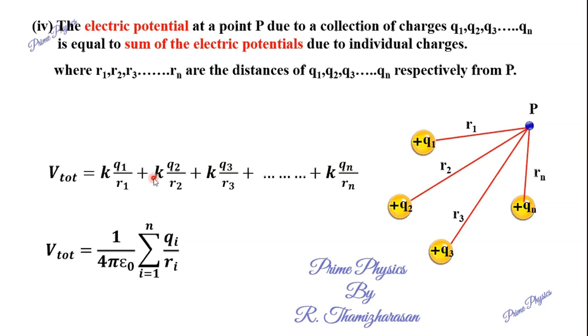The total potential is: V = potential due to q1 plus potential due to q2 plus potential due to q3, and so on up to qn. Since potential is a scalar, we simply add them. The formula for total potential due to a system of charges is: V = (1 / 4πε₀) × Σ (qi / ri), where i goes from 1 to n. This is the final formula.